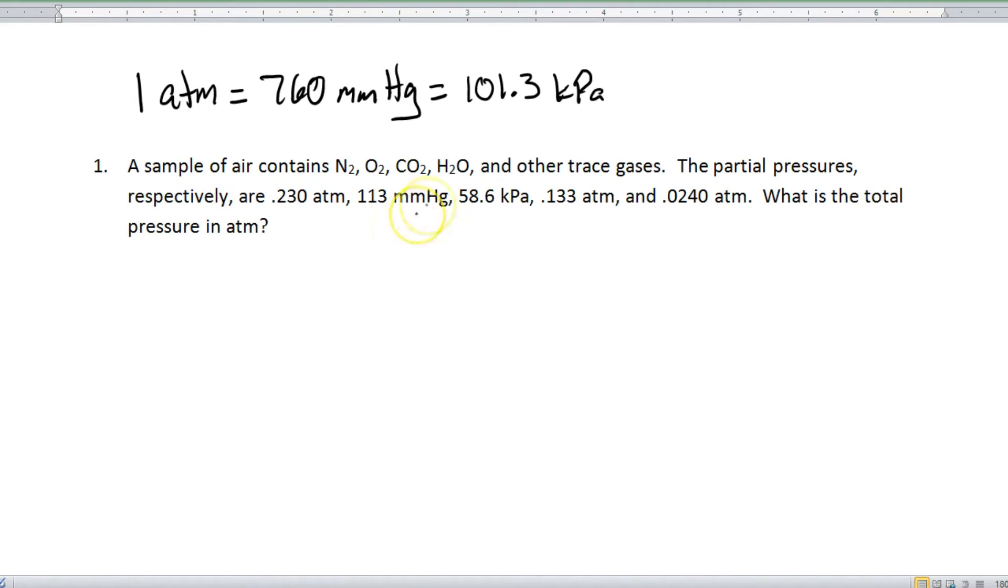Okay, so the first thing we're going to do is make sure that all of our units of pressure here are actually in atmospheres. So we're going to start with the 113 mmHg, put that over 1, and we're going to convert that into atmospheres. So since the mmHg is on top, that means it's going to go here on the bottom with atm on the top. According to our conversion factor, we have 1 atm and 760 mmHg.